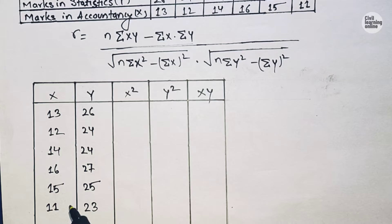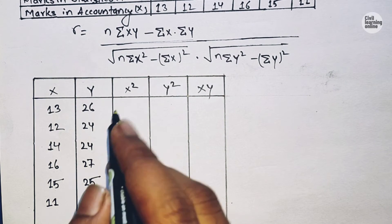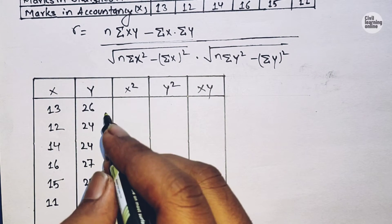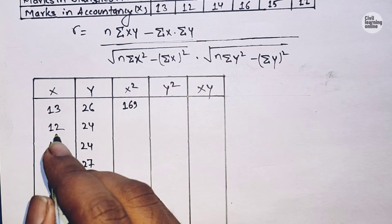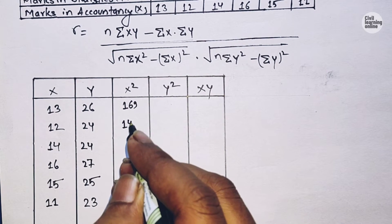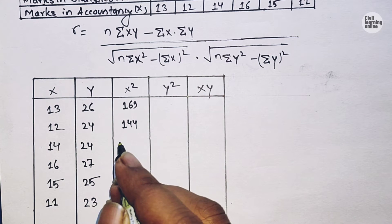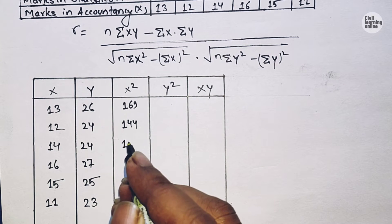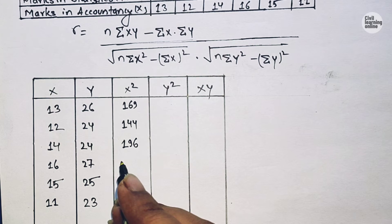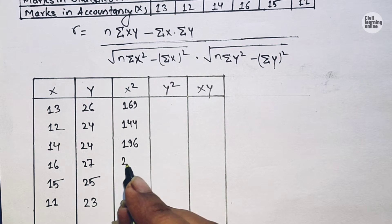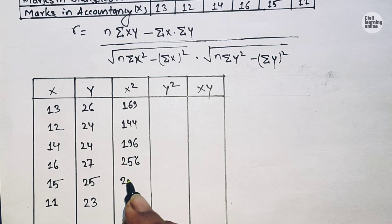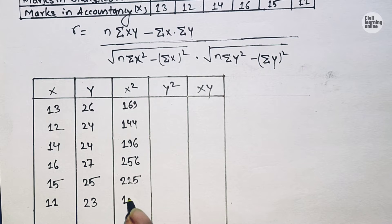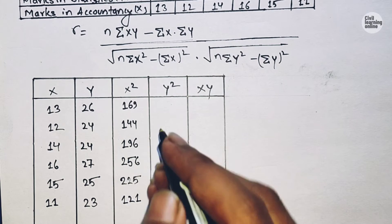X square means we need to calculate: 13 squared is 169, 12 squared is 144, 14 squared is 196, 16 squared is 256, 15 squared is 225, 11 squared is 121.